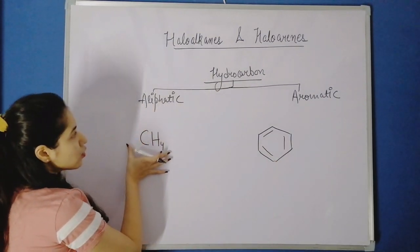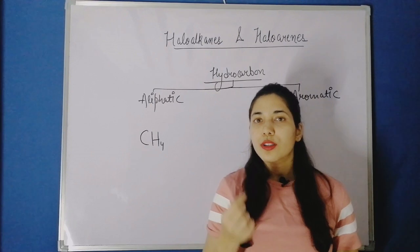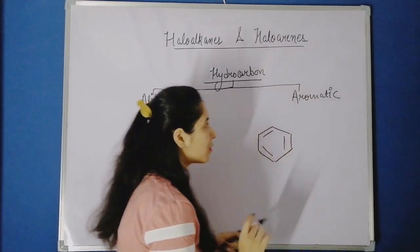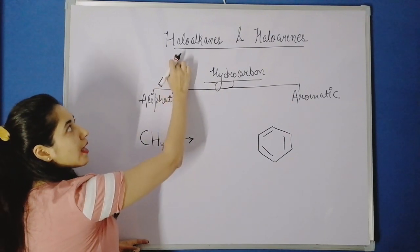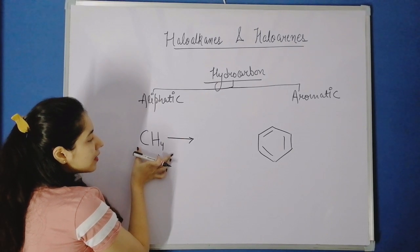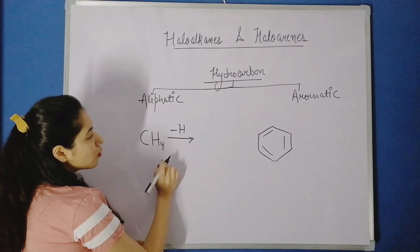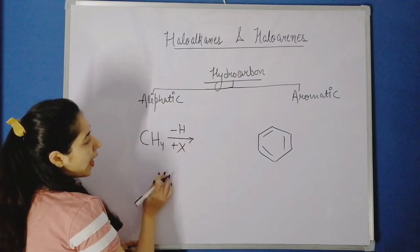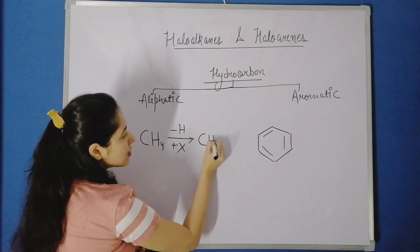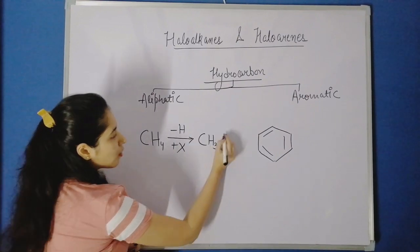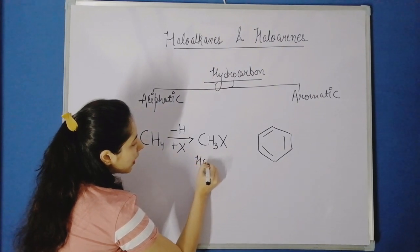Now, if we take this aliphatic hydrocarbon CH4 and replace one hydrogen atom with a halogen atom, the compound we get will be known as a haloalkane. So if I remove one hydrogen from CH4 and add one halogen X in its place, what remains is CH3 and adding X gives us CH3X — this compound is known as a haloalkane.